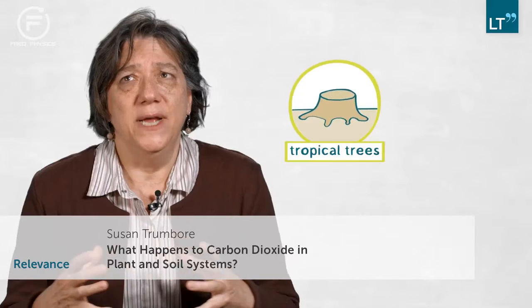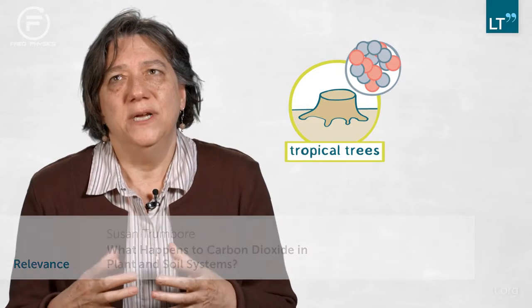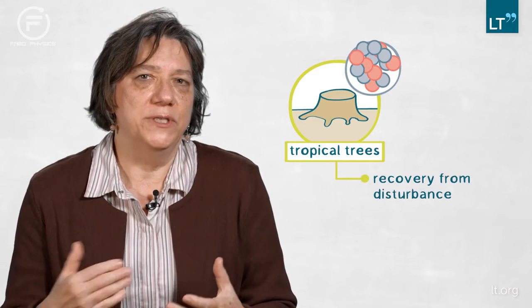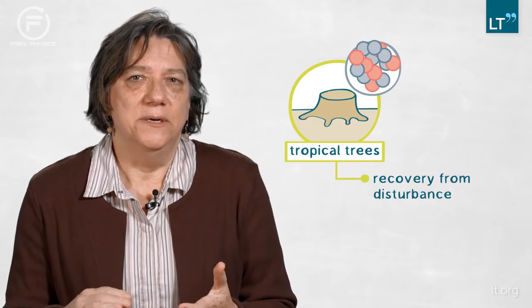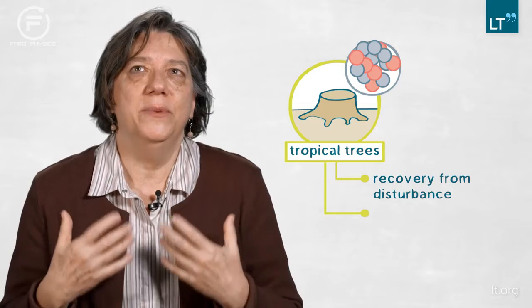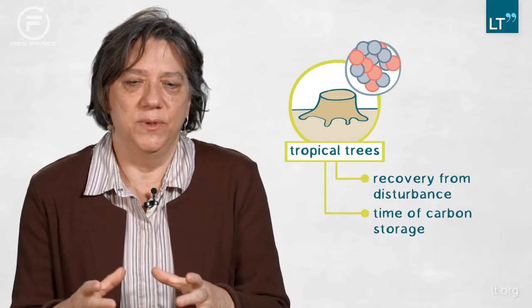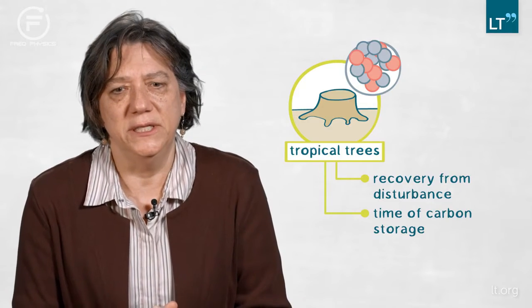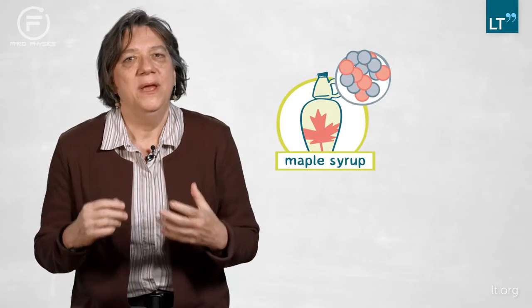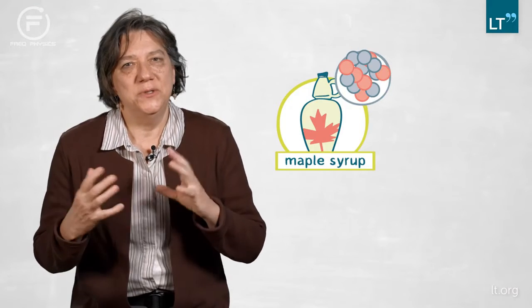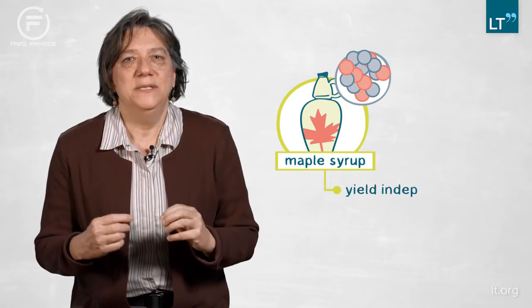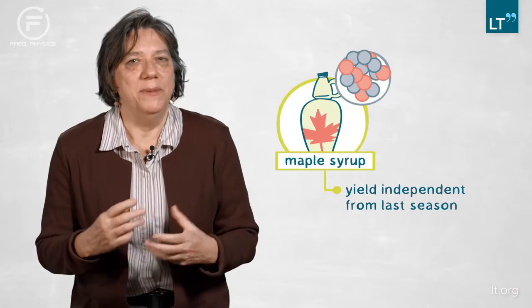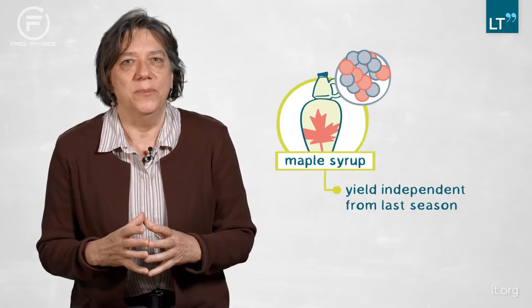The relevance depends on the question we were asking. For growth rates and ages of tropical trees, we want to understand how fast these forests might recover from a disturbance and also how long carbon stays in these trees before they die and ultimately decompose. For the maple syrup, knowing that it's made from carbon that was fixed three to five years ago means that any single growing season won't influence so much the yield of maple syrup in the following year.